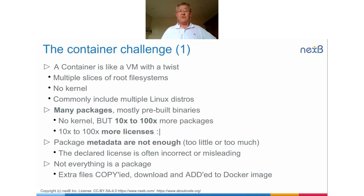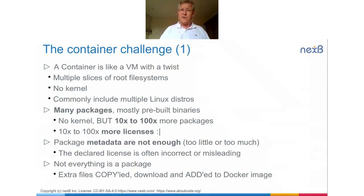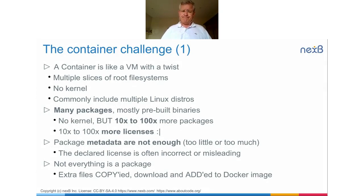The problem is that the metadata provided with packages — whether application or system packages — is often not enough. It's misleading, too little, or too much. When I say too little, the licensing information provided by RPM packages in Fedora is really very terse. In some cases for application packages, it's entirely missing. In some other cases like Debian packages, you have very long copyright files which are difficult to interpret. And the problem is, at scale, the declared license is often either incorrect or misleading.